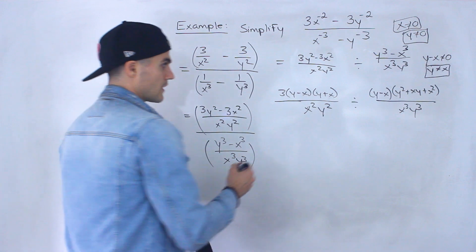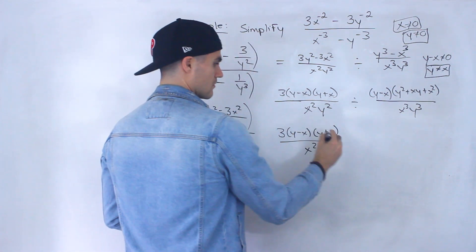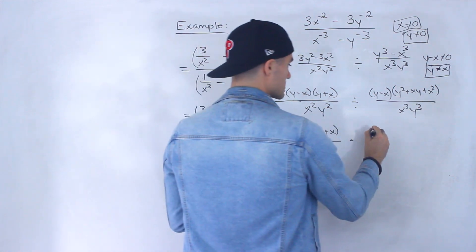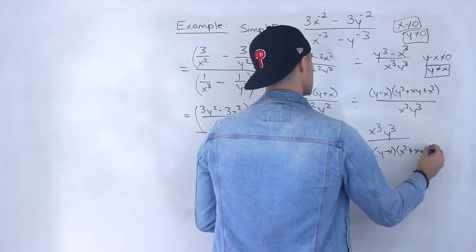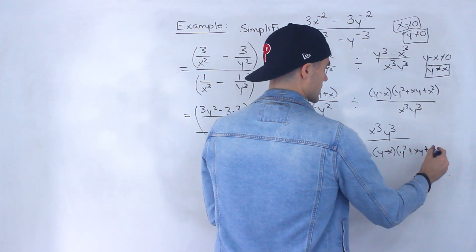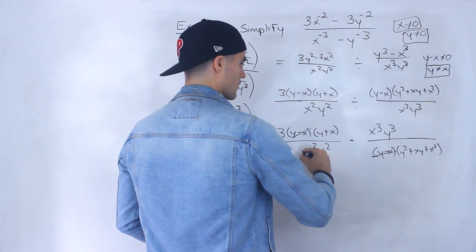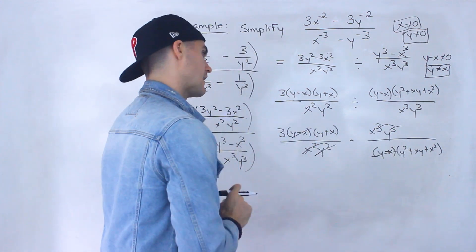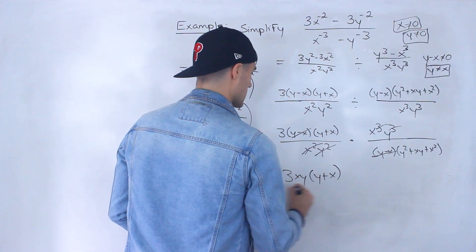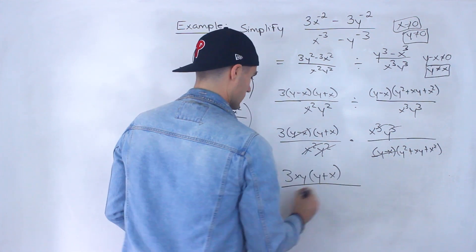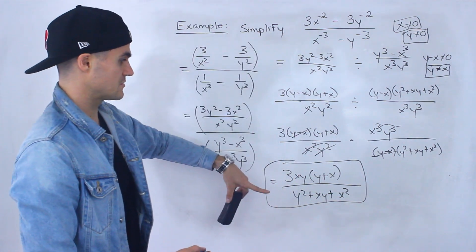So we've got our restrictions and now we can simplify. We flip that second fraction and multiply. So we have x cubed y cubed, all over y minus x, times y squared plus xy plus x squared. Notice y minus x and y minus x cancel out. We're left with xy from the x cubed y cubed canceling with x squared y squared. So the final answer is 3xy times y plus x, all over y squared plus xy plus x squared.